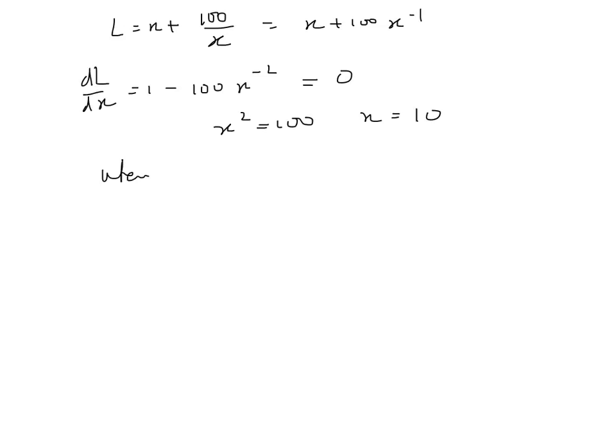A negative solution doesn't count because it's obviously fencing. So when x = 10, the length here is 10 + 100/10, which would give us 20. Now this value is either a maximum or minimum. To test whether it's a maximum or minimum, we can take the second differential.